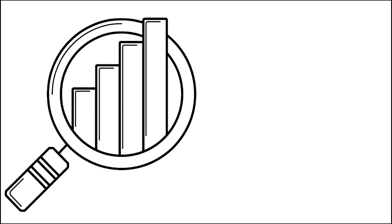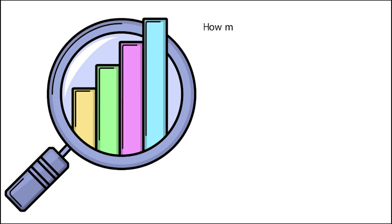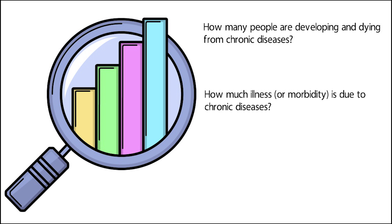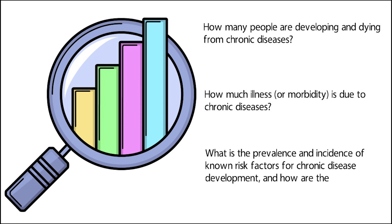Chronic disease surveillance collects data to answer three broad questions. These are: how many people are developing and dying from chronic diseases? How much illness or morbidity is due to chronic diseases? And what is the prevalence and incidence of known risk factors for chronic disease development? And how are these changing over time?